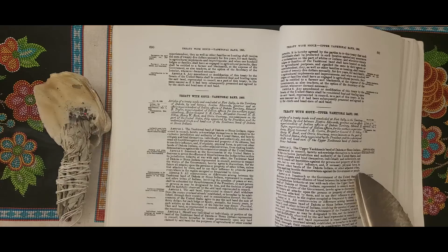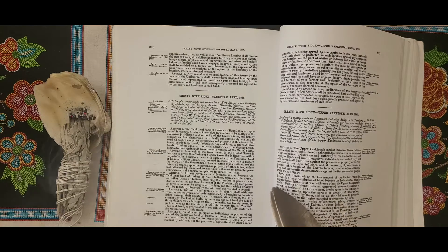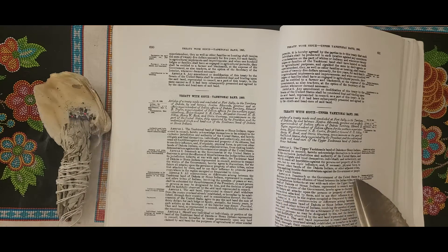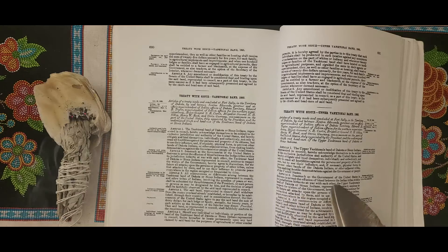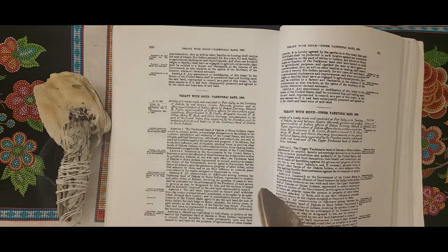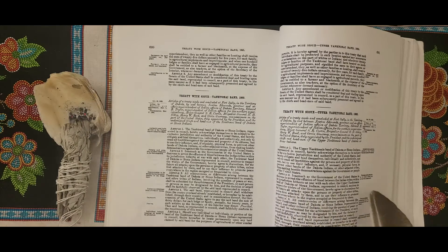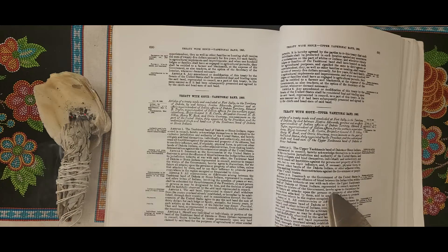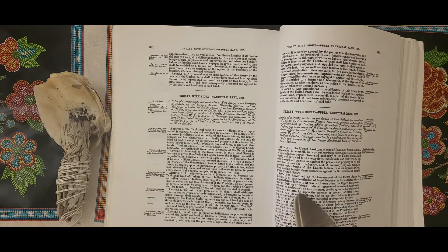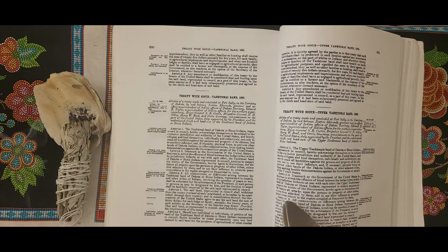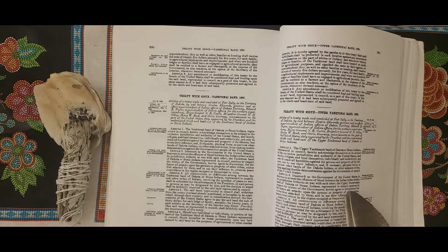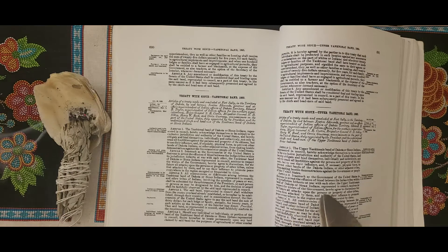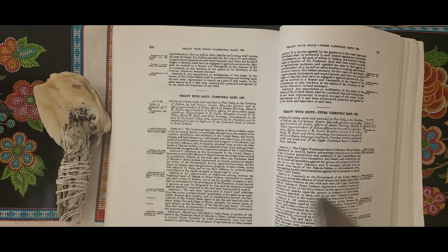Article 2: Inasmuch as the government of the United States is desirous to arrest the effusion of blood between Indian tribes within its jurisdiction heretofore at war with each other, the Upper Yanktonai Band of Dakota or Sioux Indians represented in council, anxious to respect the wishes of the government, hereby agree to discontinue for the future all attacks upon the persons of other tribes unless first attacked by them, and to use their influence to promote peace everywhere in the region occupied or frequented by them.